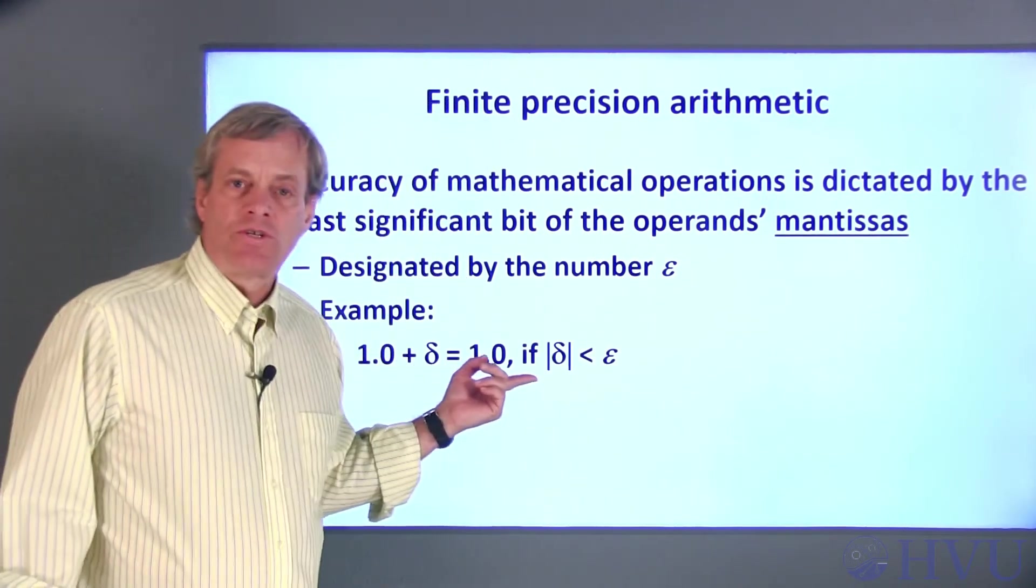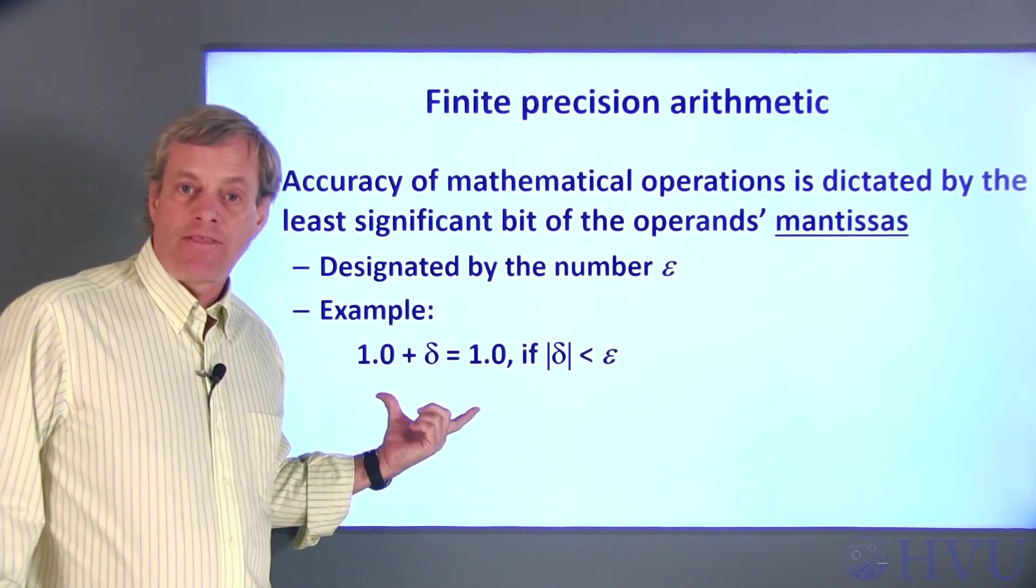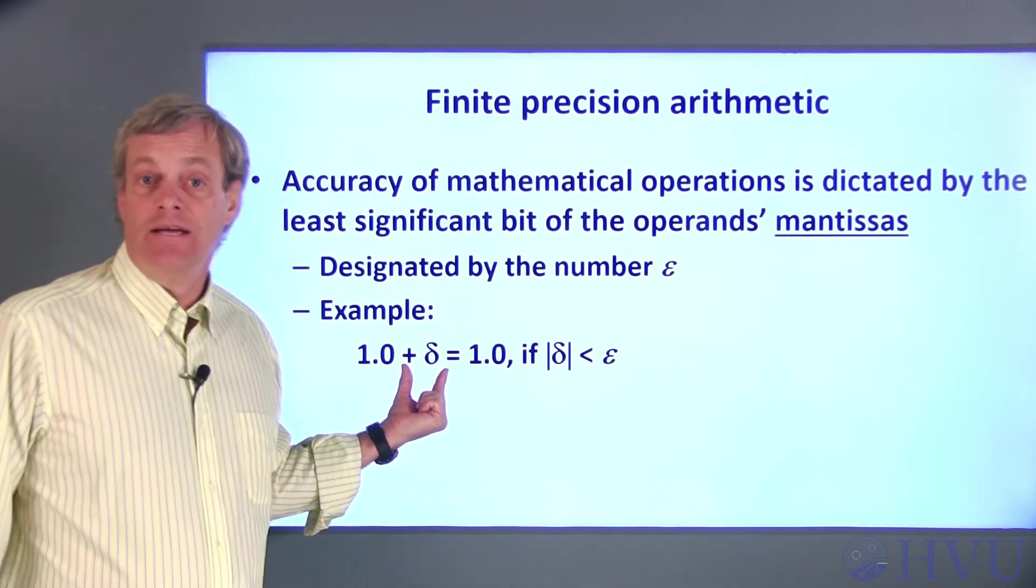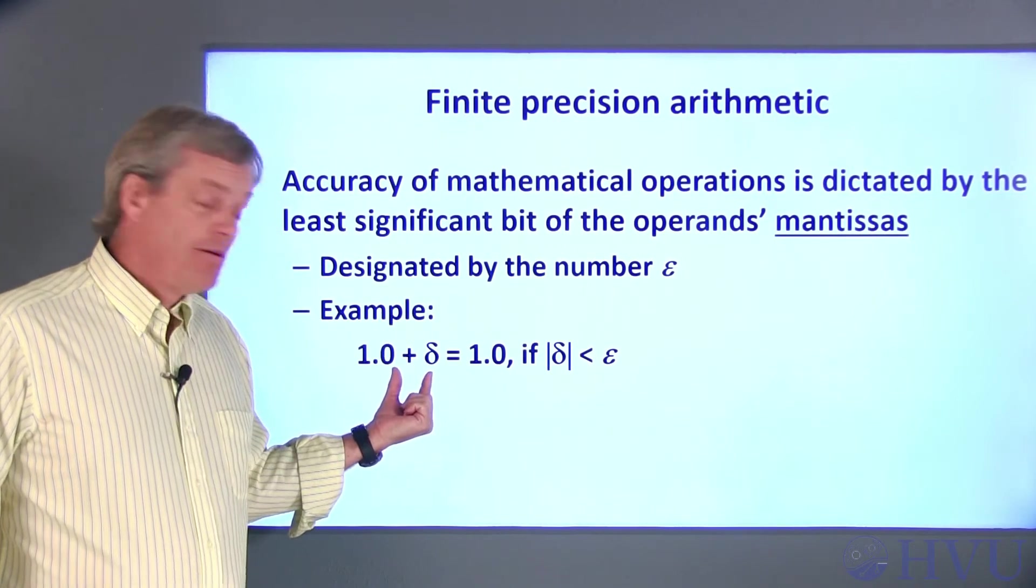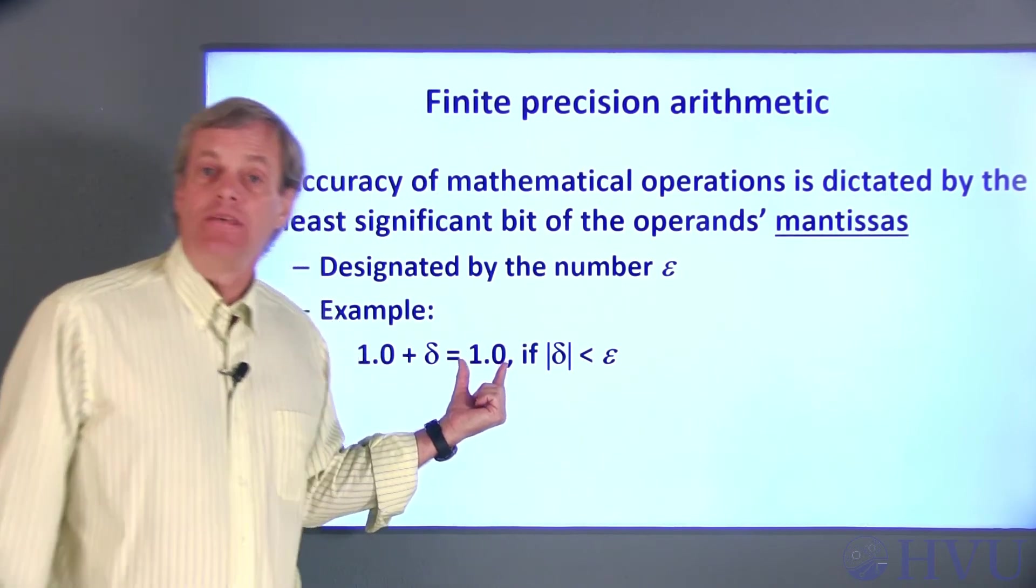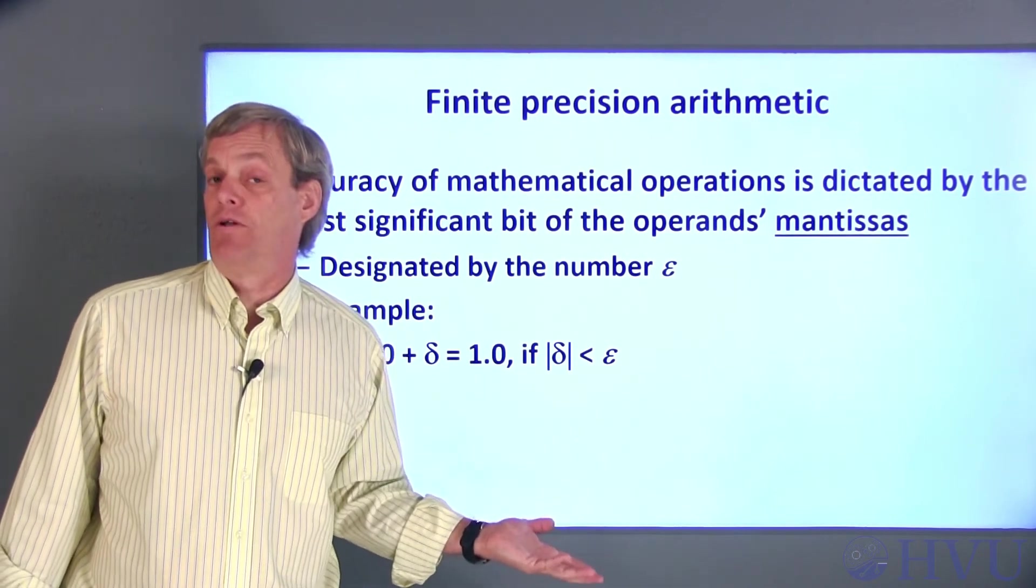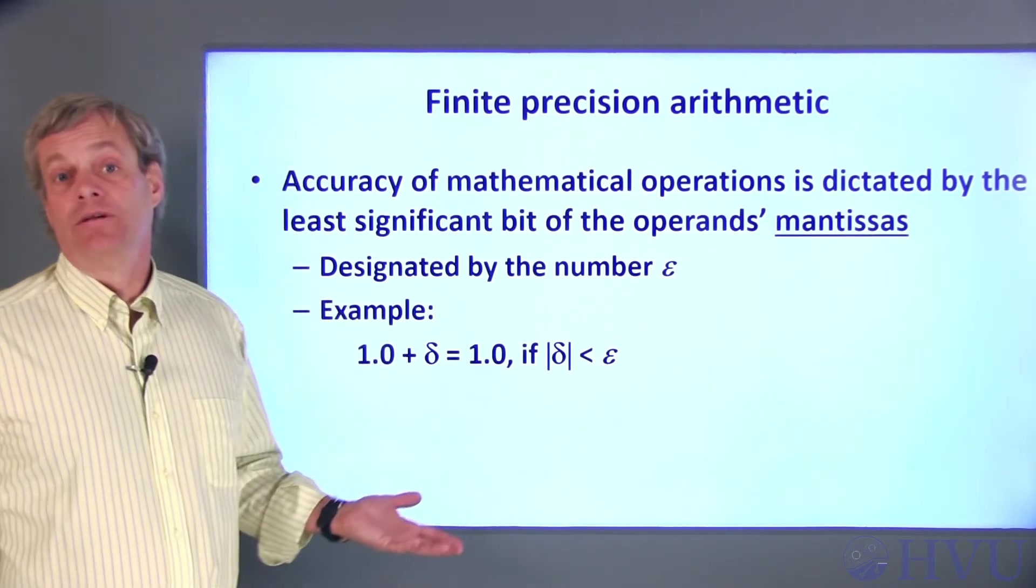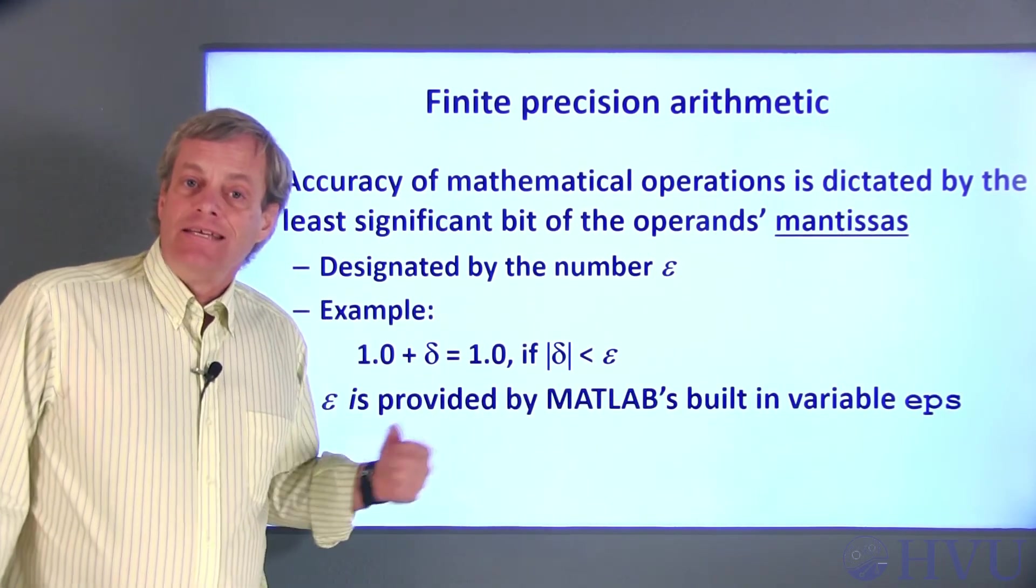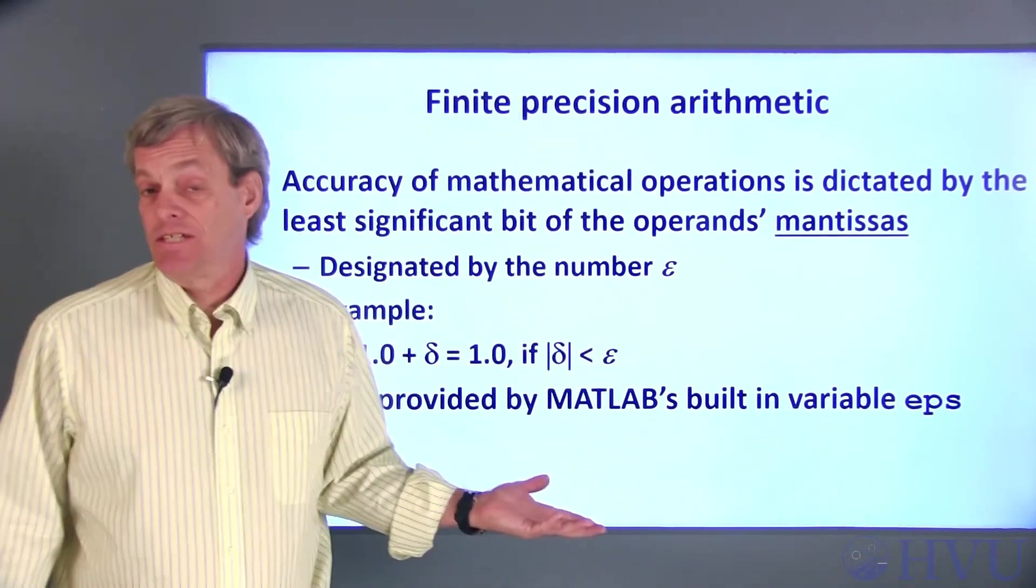The result is this rather strange mathematical expression. This has no meaning in terms of symbolic mathematics unless delta is exactly zero. But it's super important in numerical mathematics. If I add a number delta, which is less than epsilon, to 1, the result is exactly 1. The implication of this is that if I try to do arithmetic with numbers that are as small or smaller than epsilon, I can't depend on the results. They'll likely be garbage. If you want to see what the value of epsilon is in MATLAB, it's provided in the variable named EPS. The number is about 2 times 10 to the negative 16th.